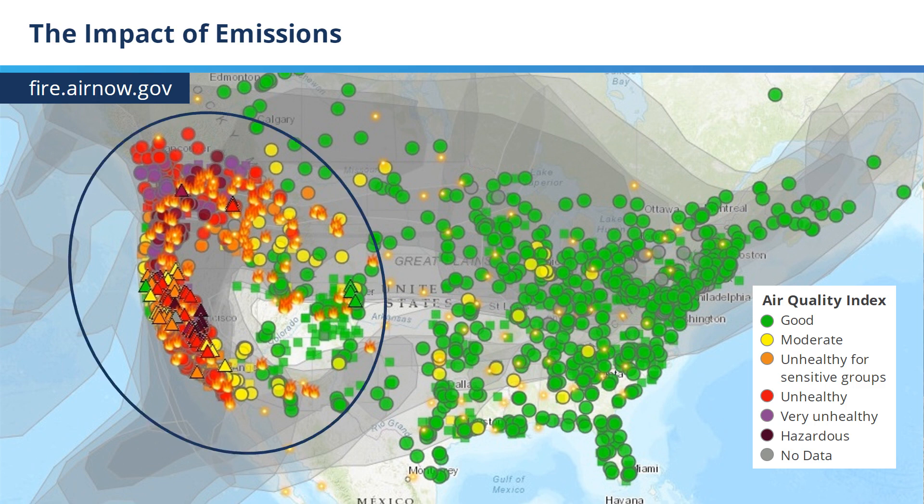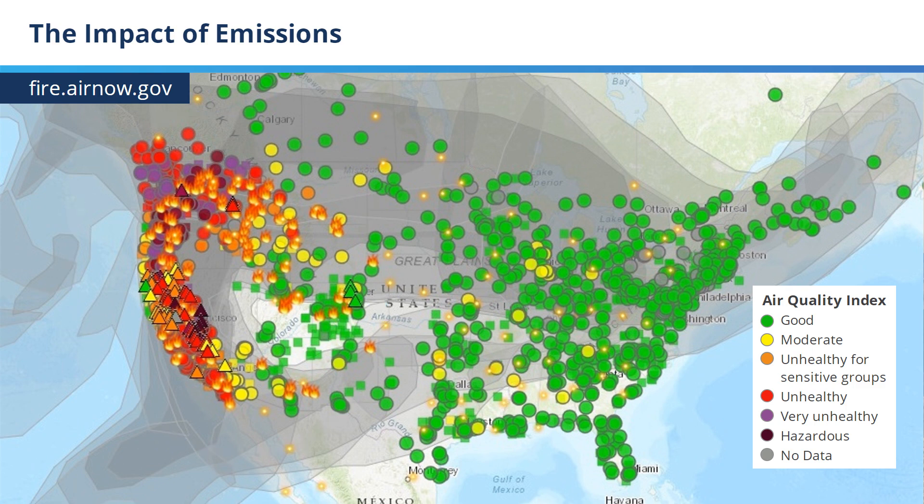Purple, crimson, red, orange, and yellow dots indicate areas on the ground where there are high concentrations of smoke. The gray shaded areas indicate the smoke plumes. Notice how they cover almost the entire United States for this particular day, demonstrating that emissions can impact very large areas beyond a fire source.